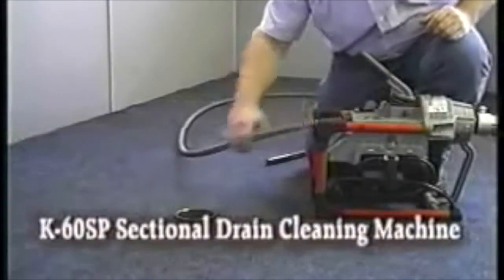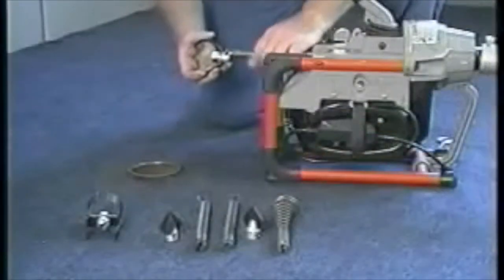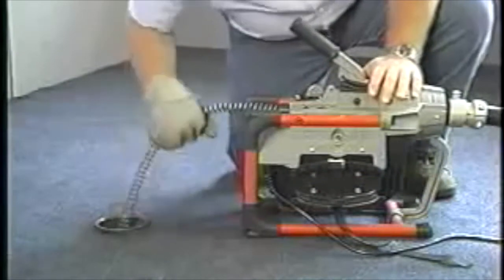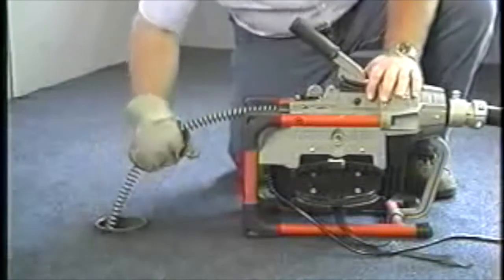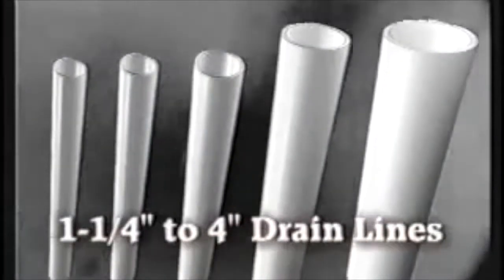The K60SP sectional drain cleaning machine is the most powerful machine in its class. The K60SP provides the professional with a powerful yet compact machine for cleaning one and a quarter inch to four inch drain lines.